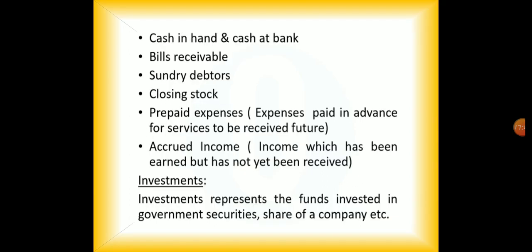Other items on the asset side include: cash in hand and cash in the bank, bills receivable, sundry debtors who are supposed to repay you, and closing stock — the stock remaining in the warehouse. Prepaid expenses are expenses paid in advance for services to be received in future. Accrued income is income which has been earned but not yet received — for example, goods sold but money not yet collected.